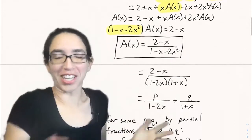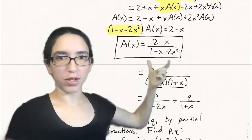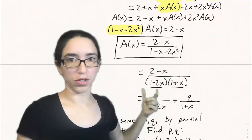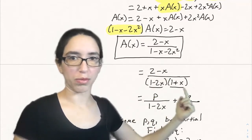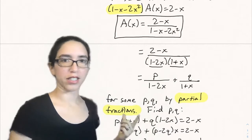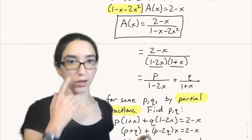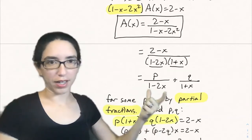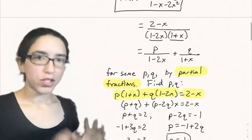We've solved for the generating function. But what does this tell us about the sequence? The nice thing is the denominator is a quadratic, and we can factor quadratics by finding roots or by reverse FOIL. The denominator factors as (1 minus 2x)(1 plus x), giving (2 minus x) over (1 minus 2x)(1 plus x). By partial fractions, we can express this as p over (1 minus 2x) plus q over (1 plus x) for some p and q — because 1 over (1 minus 2x) is essentially a geometric series. Let's find p and q.